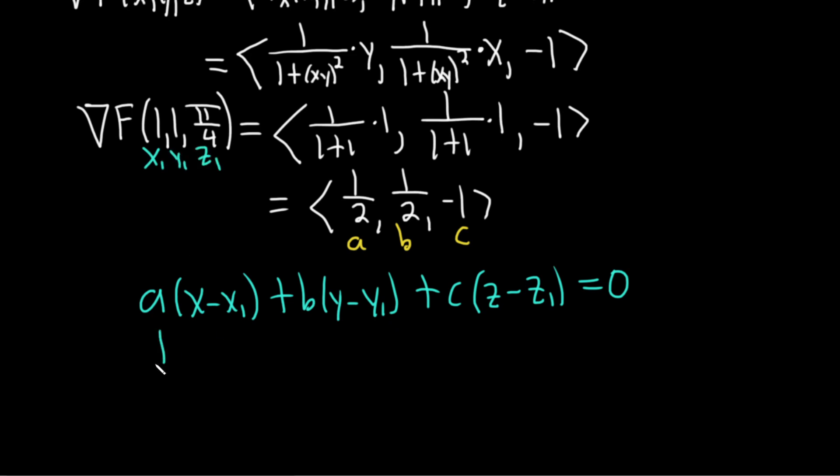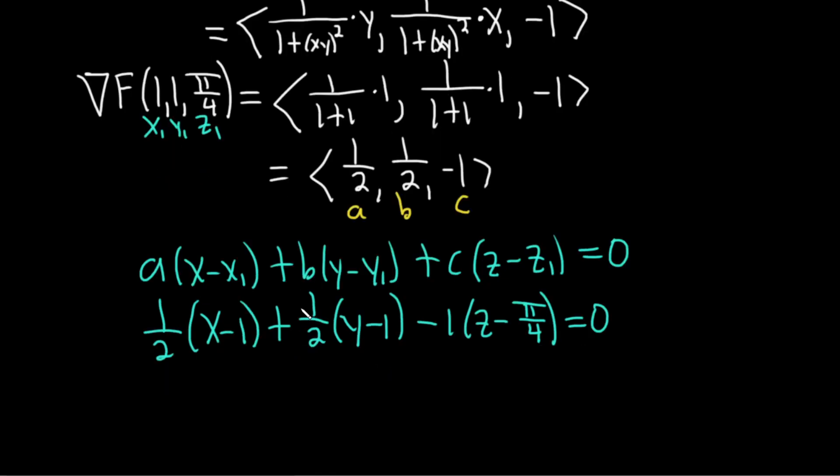So it'll be (1/2)(x - 1) + (1/2)(y - 1) + (-1)(z - π/4), and that's all equal to 0. Very good. x1, y1, z1, all looks good.